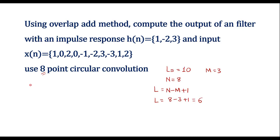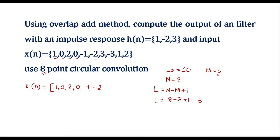In the overlap-add method, the input sequence x[n] is divided into sub-blocks, each consisting of L samples of x[n] followed by M-1 zeros. The first sub-block x1[n] consists of the first 6 samples: {1, 0, 2, 0, -1, -2}, followed by 2 zeros (M-1 = 2). The length of x1[n] is 8.